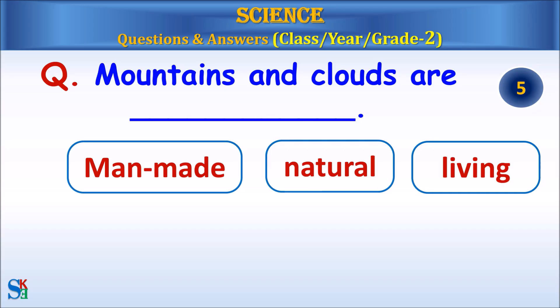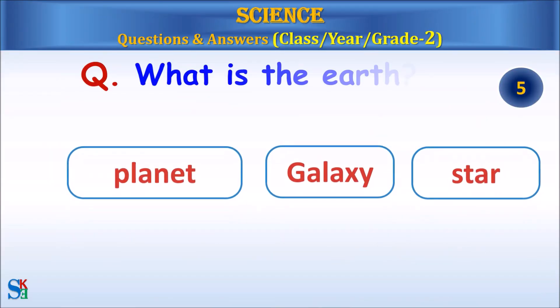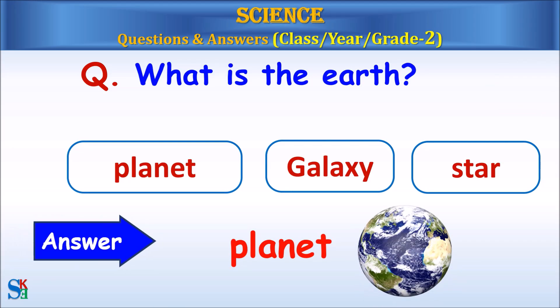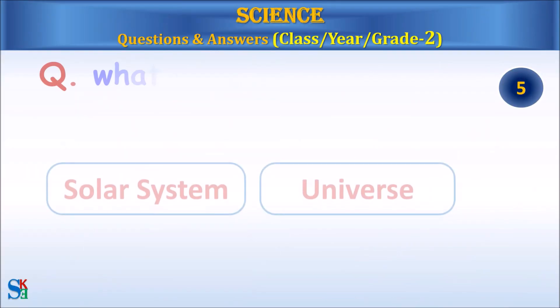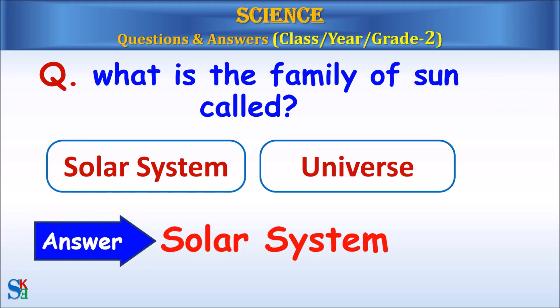Mountains and clouds are man-made, natural or living? Answer, natural. What is the earth? Planet, galaxy or star? Answer, planet. What is the family of sun called? Solar system or universe? Answer, solar system.